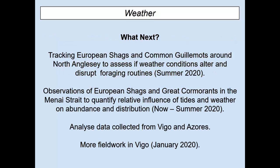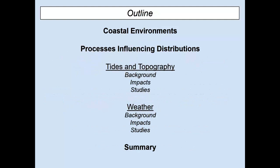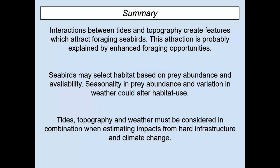Next summer we're going to test these ideas further, with a perfect system on our doorstep — the Menai Strait and the Conwy estuary. We're going to track shags and guillemots, look at shags and cormorants in the straits, and analyze data from clips and video in the estuary. In summary: interactions between tides and topography create features which attract seabirds — probably explained by enhanced foraging opportunities based on prey abundance and availability, but there could be seasonal and weather-driven shifts. We must also consider these processes in combination with impacts from hard infrastructure and climate change.